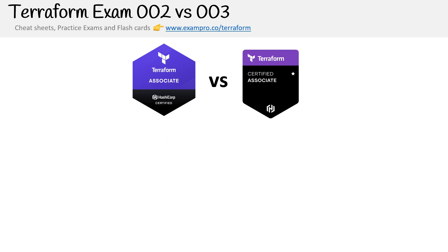This is the third version of the certification. Not a whole lot has changed between version 002 and 003. One of the big differences is they changed the badge design. There were also superficial name changes to the domain outlines — basically all the domains are the same with some tweaks. They did cut some content from the first two domains, since those were more general concept knowledge. I'm leaving that content in this course because I think it's very valuable — you're going to be overprepared for those first two domains.